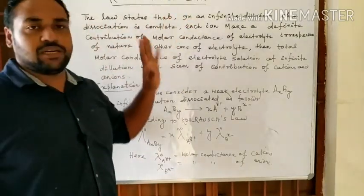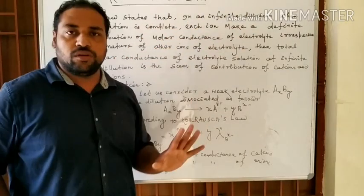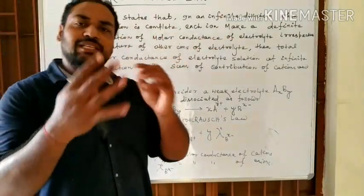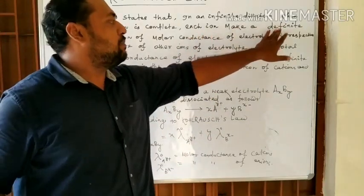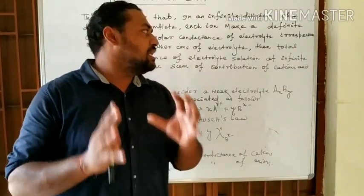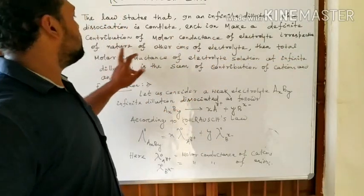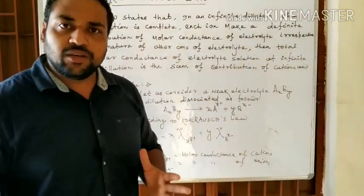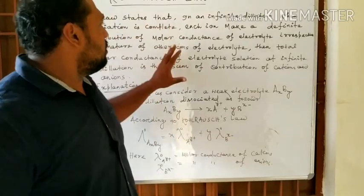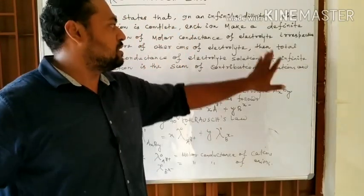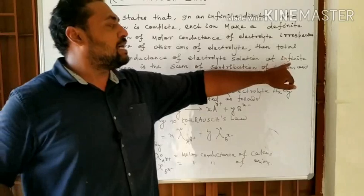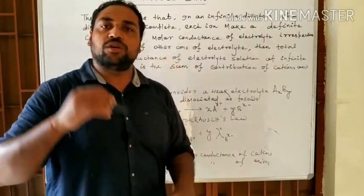This is the basis of Kohlrausch's Law, which states that at infinite dilution, when dissociation is complete, each ion makes a definite contribution to the molar conductance of the electrolyte, irrespective of the nature of the other ions present. That means the cation conducts independently of the anions, and the anions conduct independently of the cations. Therefore, the total molar conductance of an electrolyte solution is the sum of the conductance of the cation and the conductance of the anion.